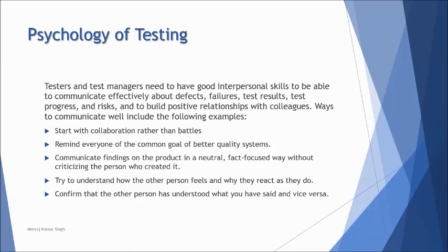Make sure you understand how this person feels when they receive that information, because it might come back to you some other day. Start with collaboration rather than battles — give more importance to collaboration rather than pointing fingers. Remind everyone of the common goal for a better quality system. Even if somebody is doing something wrong, convince them that it is about defining quality in the product, not about personal rivalry. Communicate findings in a neutral, fact-focused way without criticizing the person who created it.